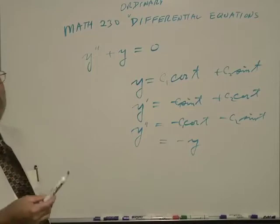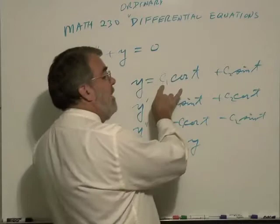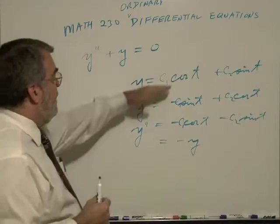And so the most general solution to this equation would be y equals a constant c1 times cosine t plus another constant c2 times the sine of t. Very easy to confirm that this also is a solution.